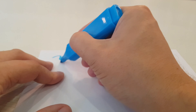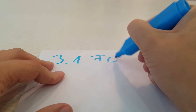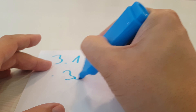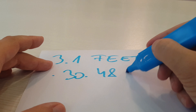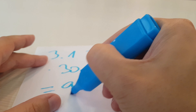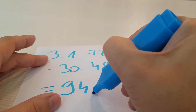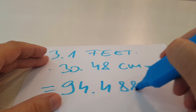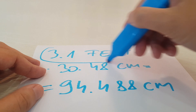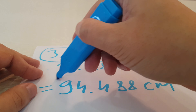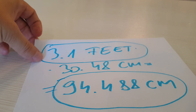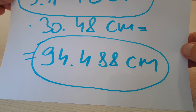We multiply 3.1 feet with 30.48 centimeter and the result is 94.988 centimeter. Here is the solution again: 3.1 feet equals 94.988 centimeter.